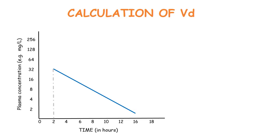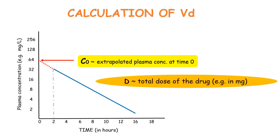So to do that, we will have to extrapolate the plot to meet the y-axis, and at that point we will get the concentration of the drug at time zero, which we can call C0. Obviously it is expressed in units like milligram per liter, while the total dose will be expressed in milligrams.